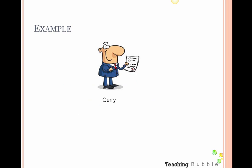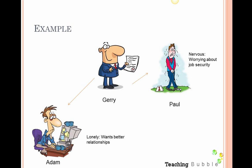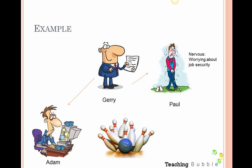Here's an example. Jerry is our manager — think of any organization you want. He has lots of employees but we'll look at two specifically. Adam is a bit lonely and motivated by better relationships with his fellow employees. He has an entry-level job and feels safe in his job, but he wants better relationships — that's his motivation. Then we have Paul, who is worried about job security and doesn't feel safe in his job.